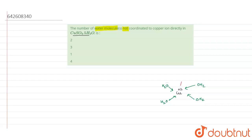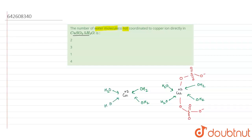Then we have a sulfate group: O=S(=O)(=O)O⁻. Similarly, in the next unit, we have Cu²⁺ with four water molecules coordinated to it, and again a sulfate group: O=S(=O)(=O)O⁻, repeating in the system.